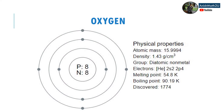Physical properties of oxygen: it has an atomic mass of 15.999, density 1.43 grams per centimeter cubed. It's a non-metal and its electron configuration is 2s2 2p4. Its melting point is 54.8 kelvin and boiling point is 90.19 kelvin. It was discovered in 1777.